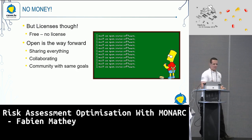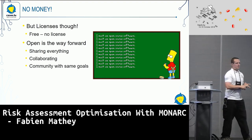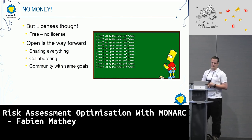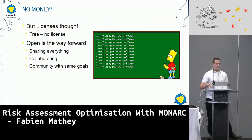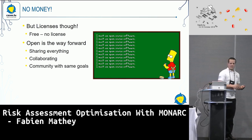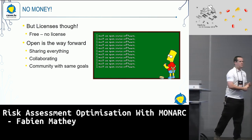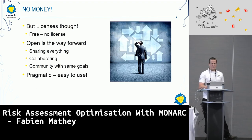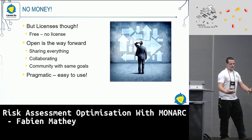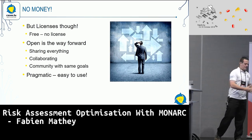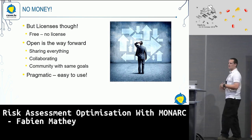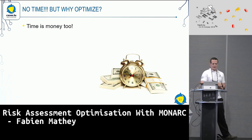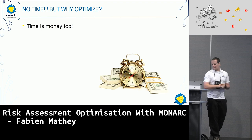The next part was that it should be open, because open is the way forward — at least that was what we heard from everybody. Without it being open, you could not share anything, you could not collaborate, and you did not have a community with similar goals. It was also difficult to maintain. And of course it should be pragmatic, because if you have a risk assessment tool, you want it to block you the least possible in your work.